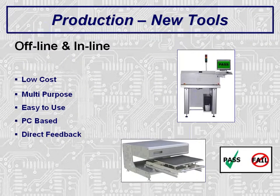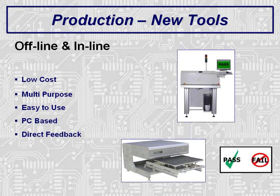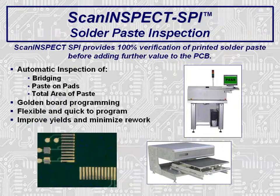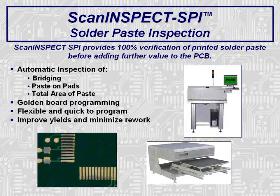ScanCAD offers a family of low-cost inspection solutions for production. These are multi-purpose, PC-based systems available in both offline desktop configurations with manual load/unload or fully automated conveyorized in-line versions. These systems provide direct feedback of inspection results — find defects and either stop the line to find the root cause before further defects are made, or keep the line running and shuttle defects to a reject station for rework. A log file that can be utilized by standard SPC packages is also created automatically. ScanInspect SPI, solder paste inspection, can check for the total area of solder paste deposits, amount of paste on pads, and bridging, using golden board programming for fast and easy setup.